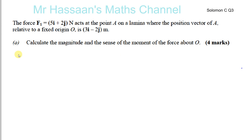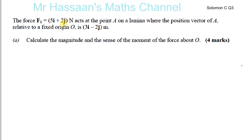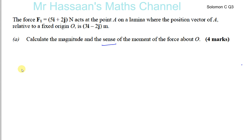We have a question that's been asked many times by students, from one of the Solomon papers. A lot of students have problems with this question. They tell us about a force in terms of vectors: force F1 is 5i + 2j Newtons, acting at point A on a lamina — a flat surface — where the position vector of A relative to a fixed origin O is 3i − 2j meters. Calculate the magnitude and the sense of the moment of the force about O. The sense means the direction — clockwise or anticlockwise.